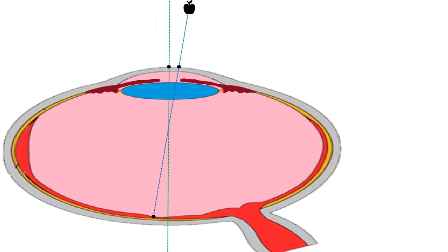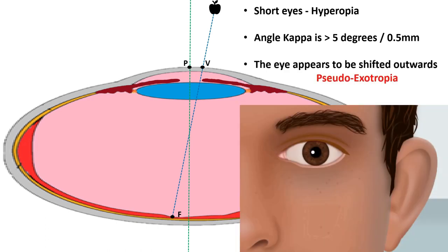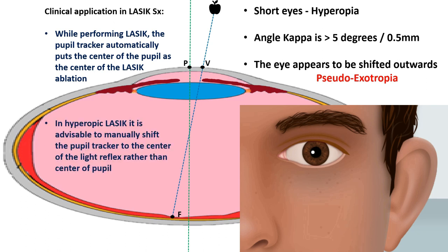Normally angle kappa is also up to 0.5 millimeters in most people, which is clinically insignificant. But in some high hypermetropes, if it is more than 0.5 millimeters, the corneal reflex appears to touch the nasal margin of the pupil. This can give a false sense of exotropia, or the eye being in an outward deviation. This is not a true strabismus — it is only because of a large angle kappa, hence it is called pseudo-exotropia. Later I will cover how pseudo-exotropia due to angle kappa can be differentiated from a true squint.